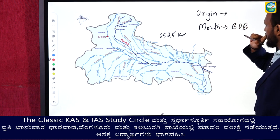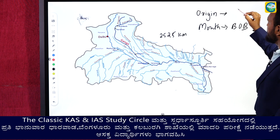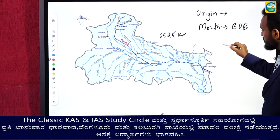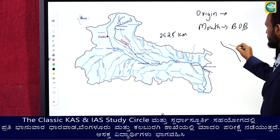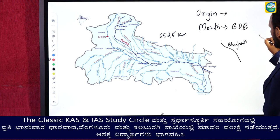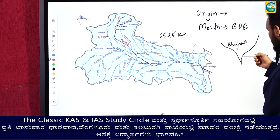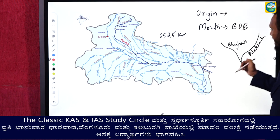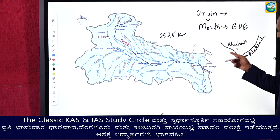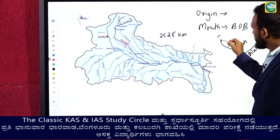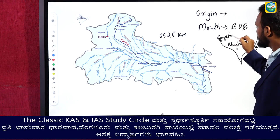The origin of Ganga is formed by two important streams: one is called Bhagirathi and the other is called Alaknanda. The Bhagirathi river originates from a glacier called Gangotri Glacier, present at Gomukh in Uttarkashi district of Uttarakhand. Whenever they ask you about origin, we need to understand that it is formed by these two important streams.